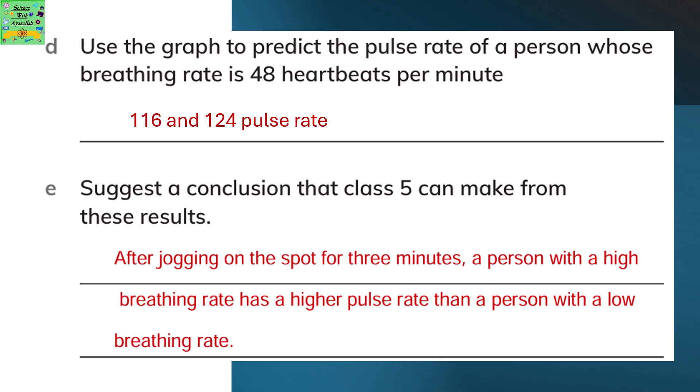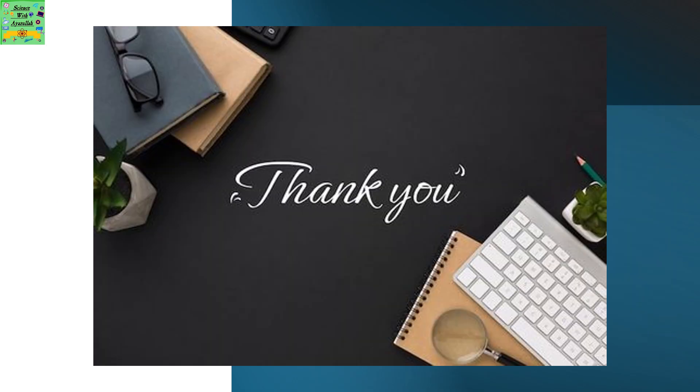Suggest a conclusion that Class 5 can make from these results. After jogging on the spot for 3 minutes, a person with a high breathing rate has a higher pulse rate, and a person with a low breathing rate has a lower pulse rate.